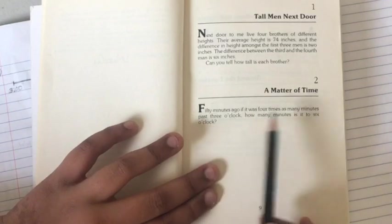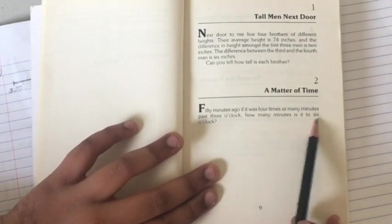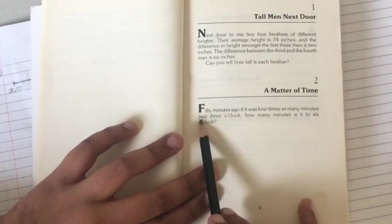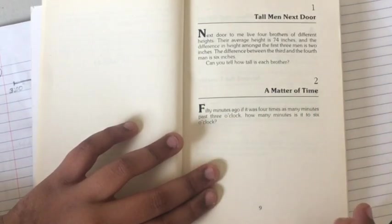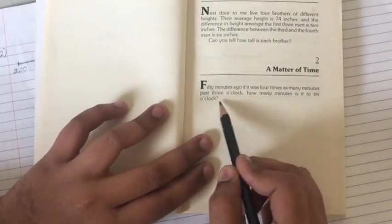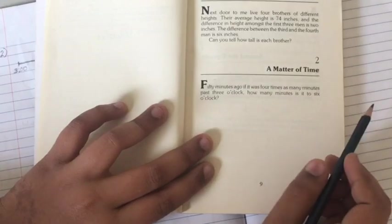But if you read it backwards, how many minutes is it to six o'clock if 50 minutes ago it was four times as many minutes past three o'clock? Which means that four times as many minutes to six o'clock.